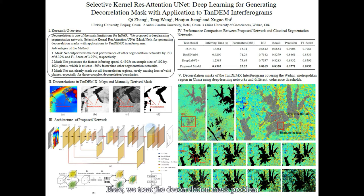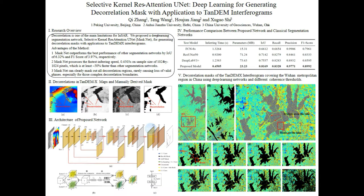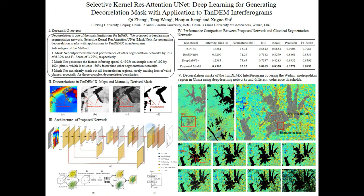Here we treat the decorrelation mask problem as a segmentation task in the computer vision field. Therefore, we propose a deep learning segmentation network, we call it MaskNet, for generating decorrelation masks, and apply it to TanDEM-X interferograms.